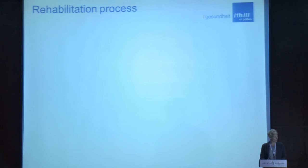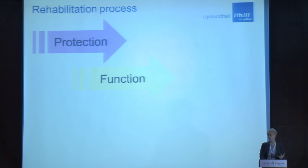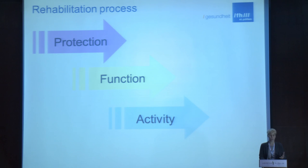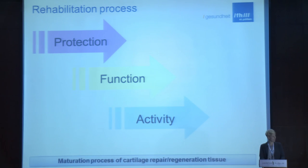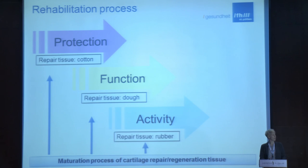Coming back to the rehab process, we can divide it into three phases. The first phase is characterized by protection; in the second phase you can start to resume functional activities; and the third phase is the activity phase, which is very important for sports people. The maturation process should build the basis of these phases. In the protection phase the repair tissue is cotton-like, in the function phase it becomes more dough-like, and in the activity phase it's comparable to rubber.